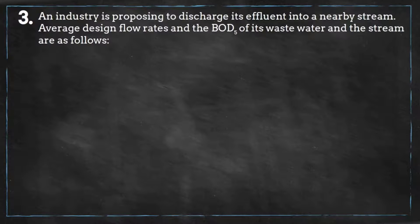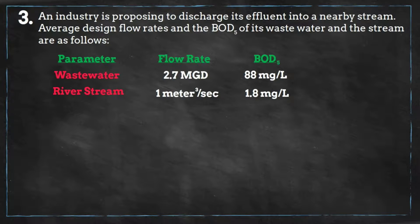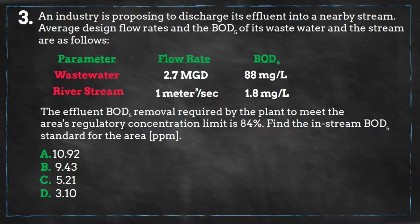An industry is proposing to discharge its effluent into a nearby stream. The average design flow rates and the BOD of its wastewater and the stream are given. The effluent BOD removal required by the plant to meet the area's regulatory concentration limit is 84%. Find the in-stream BOD standard for the area. Is it A) 10.92, B) 9.43, C) 5.21, or D) 3.1?